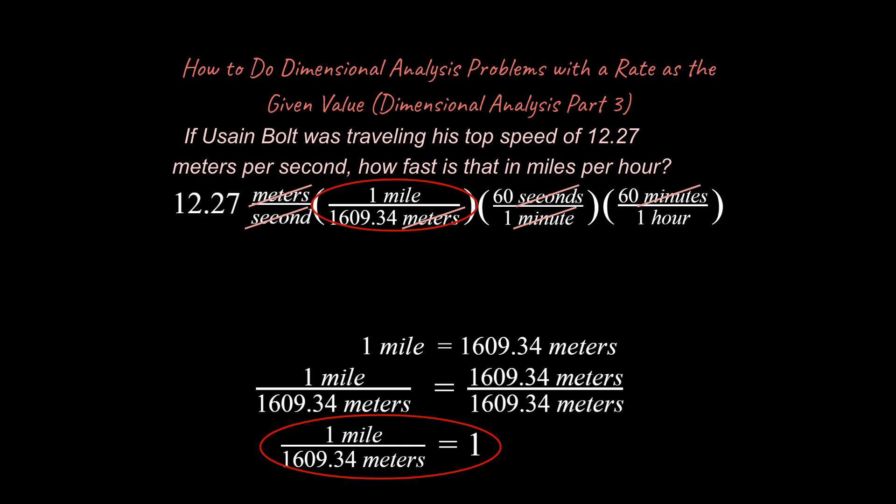And notice what units I'm left with. I'm left with miles per hour. And that's what we want. Now at the very end of the problem, once we've done all of this work, now we can plug in our numbers and use a calculator and figure out what the answer is going to be. In this case, it's going to be 27.45 miles per hour.